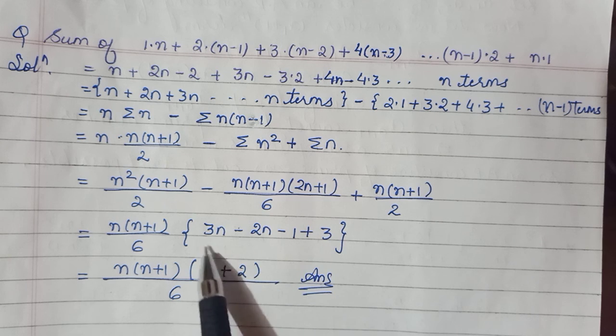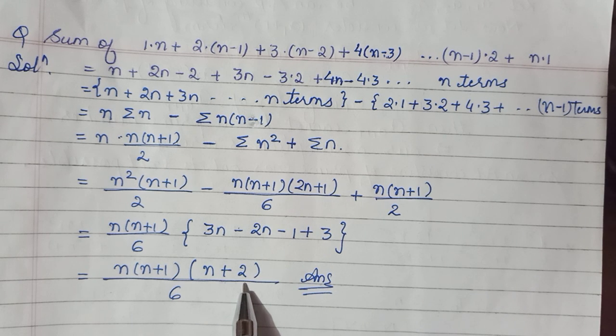And from here n(n+1) all gone, and this has 6, been a 3 times increase ho gaya. Simplifying that is coming equal to n(n+2). So this is how you can represent your sum.